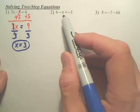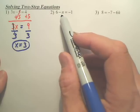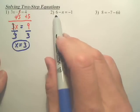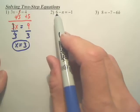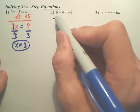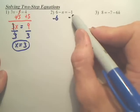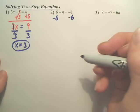I want to get the n by itself. So I got to get rid of this 6. So that is a positive 6. How do you get rid of it? You minus 6. And what you do to one side, you also have to do the other.